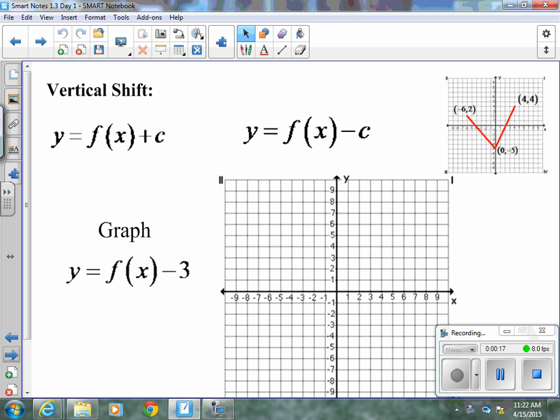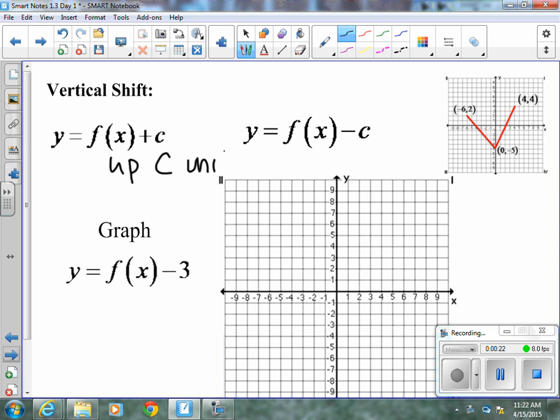First thing, vertical shift. When you add C, it's up C units. When you subtract C, it's down C units. So if our parent function is what's up there, instead of (-6, 2), we have (-6, -1). Instead of (0, -5), we have (0, -8), and instead of (4, 4), we have (4, 1), and that is our vertical shift of -3.